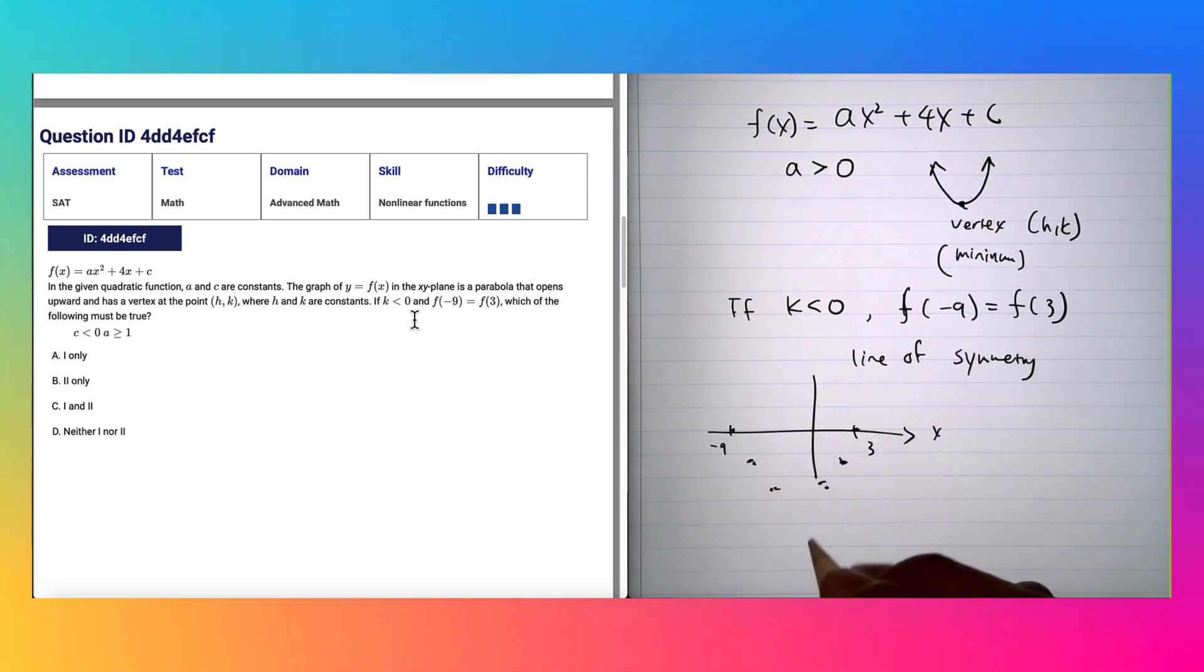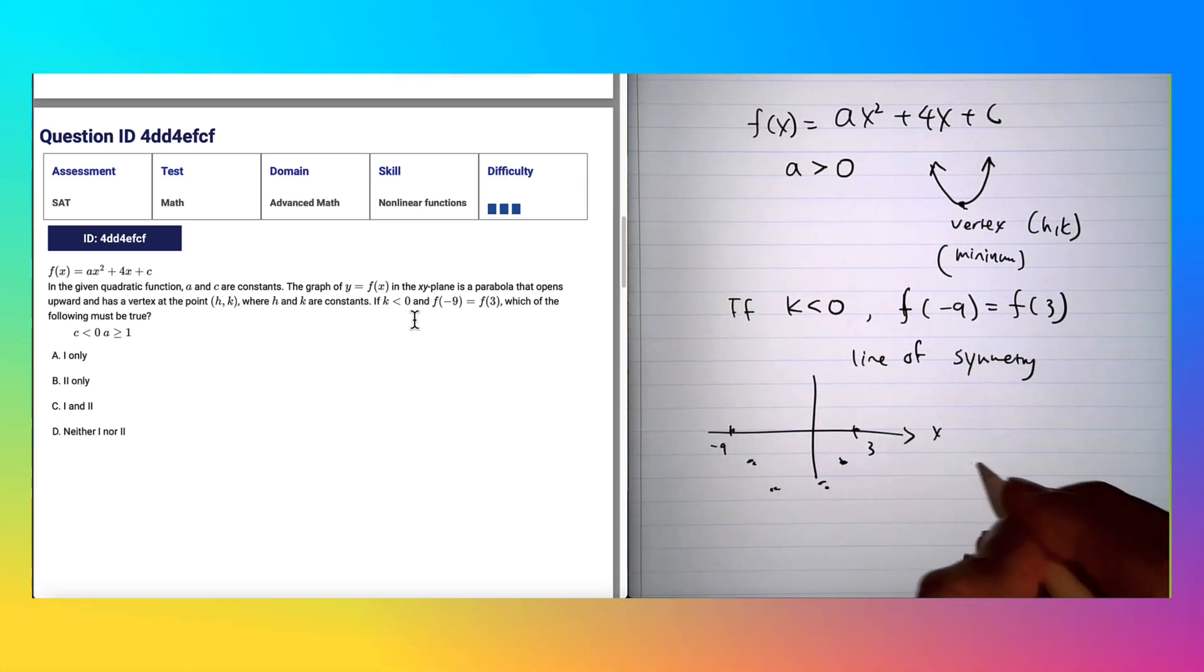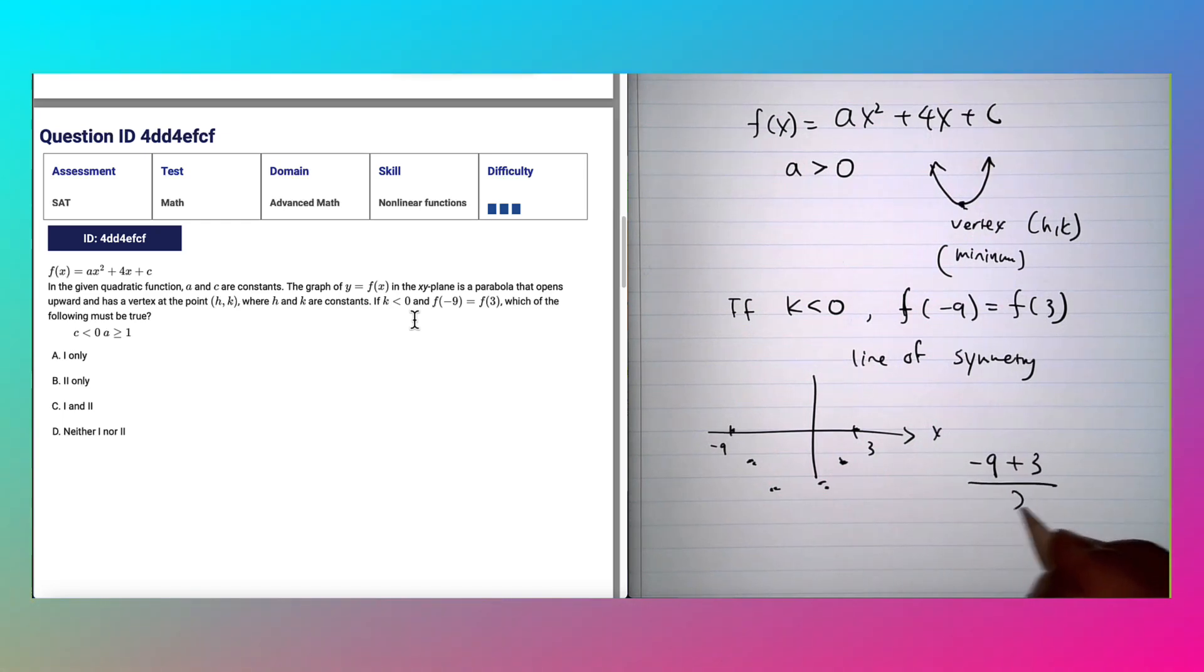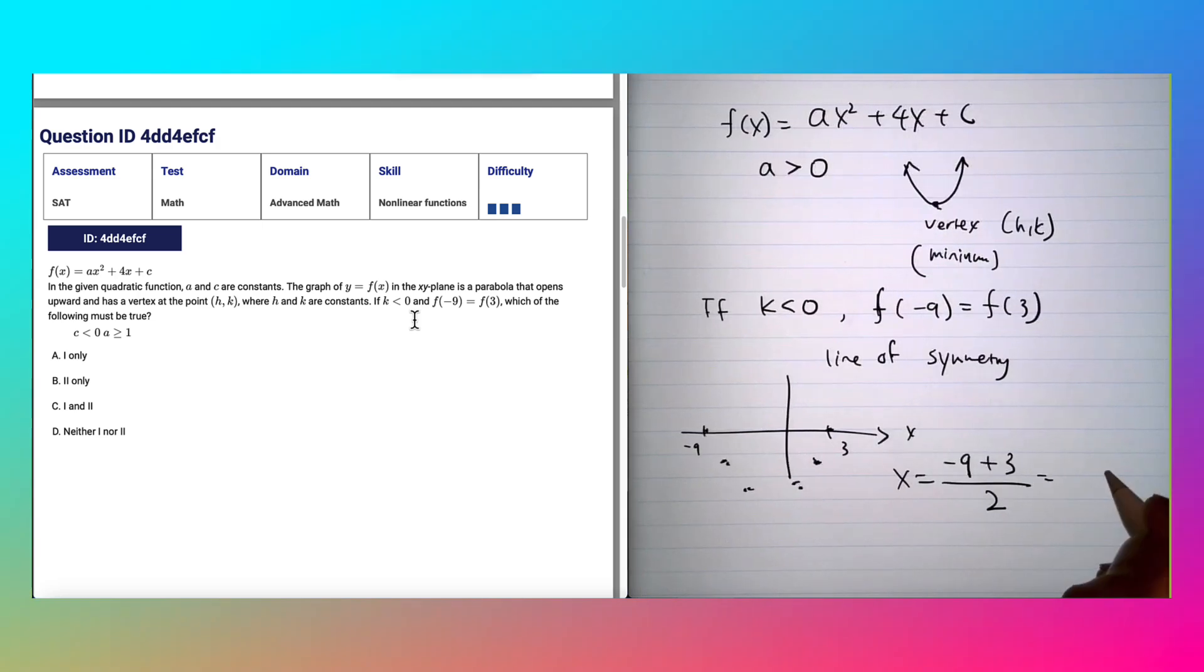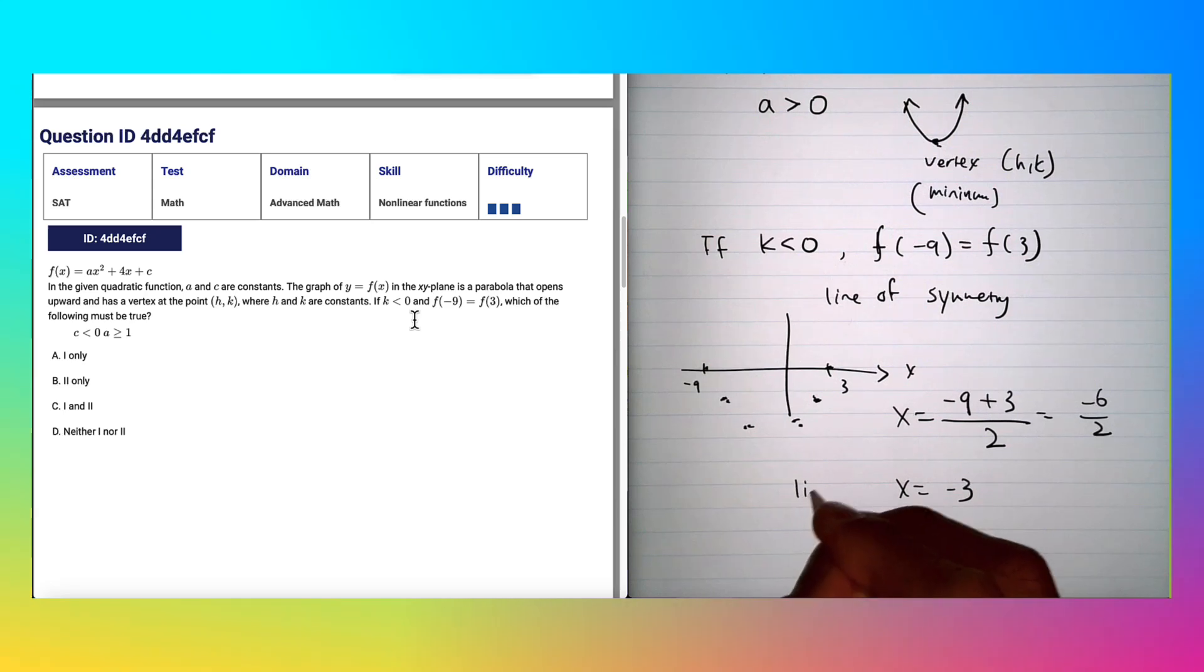So to find that, -9 the lower end and 3 the higher end, add and divide by 2, and it gives us the line of symmetry. -9 + 3 gives you -6, and you divide by 2, you get -3. So this is the line of symmetry of our quadratic.